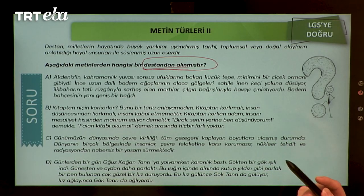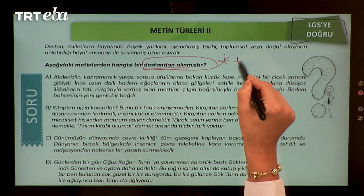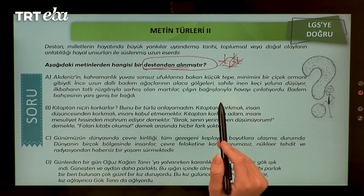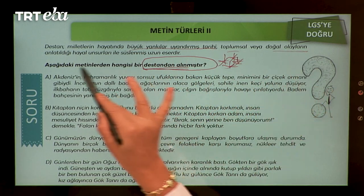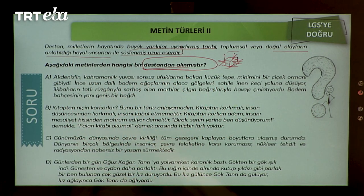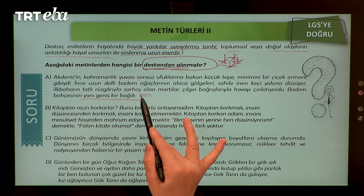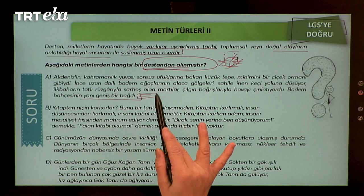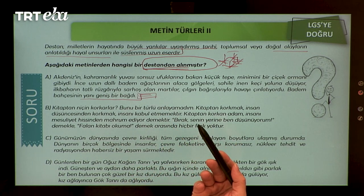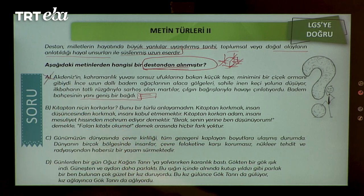Destanda ne vardı? Olağanüstülükler vardı değil mi? Kahramanlarda olağanüstü özellikler taşıyordu. Destan, milletlerin hayatında büyük yankıları uyandırmış tarihi, toplumsal veya doğal olayların anlatıldığı, hayal unsurları ile süslenmiş uzun eserdir. A seçeneğinde sanatsal bir üslup var; bir hikayenin girişi gibi betimlemeler yapılmış ama olağanüstülükler yok. A seçeneği destandan alınmış olamaz.